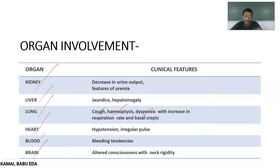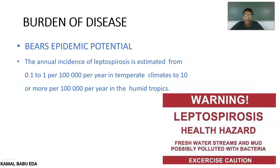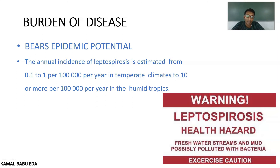Coming to the burden of disease, leptospirosis has the potential to cause an epidemic. In annual incidence, in temperate areas, cases are about 0.1 to 1 per 100,000 population. In humid and tropical conditions, cases can be 10 or more per 100,000. This shows the higher disease burden in tropical compared to temperate areas.